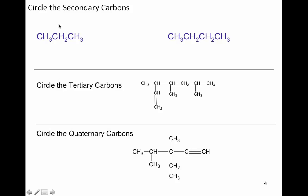For this part, let's go ahead and circle the secondary carbons. You look at the carbon, see how many carbons it is bonded to, and the number of carbons it's bonded to is its classification — primary, secondary, tertiary, or quaternary. Go ahead and pause the video and circle the secondary, tertiary, and quaternary carbons in your lecture notes. Restart the video and we can check your work.